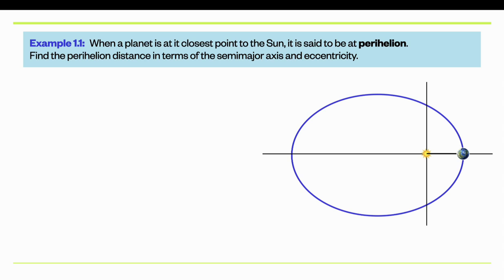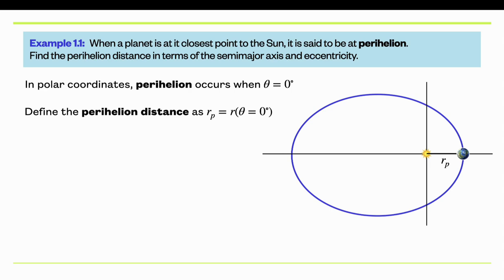So here's an example. Let's calculate the distance the planet is from the Sun at its closest point. So this closest approach is called perihelion. And so we want to find that distance based on the previous formula. So in polar coordinates, the perihelion occurs when that angle theta is equal to zero degrees by definition. So we'll define that distance as r_p, p for perihelion. r is the radial distance of the planet to the Sun. And so the perihelion distance is that radial coordinate evaluated at theta equals zero degrees.